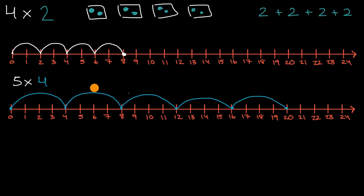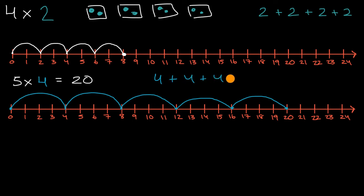We could also view this as being the same thing as five fours, or four plus four plus four plus four plus four. Starting at zero, we're adding four, then another four, then another four, then another four, and another four — we have five fours here.